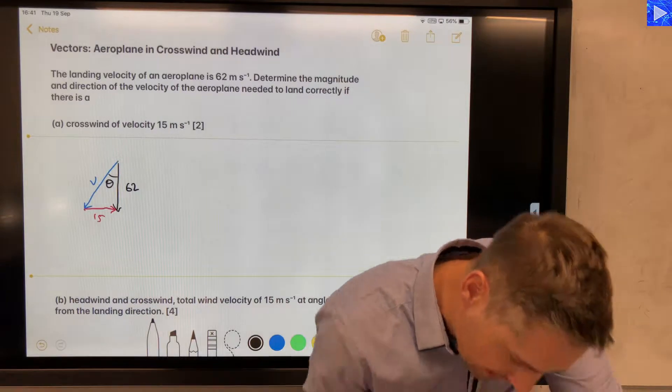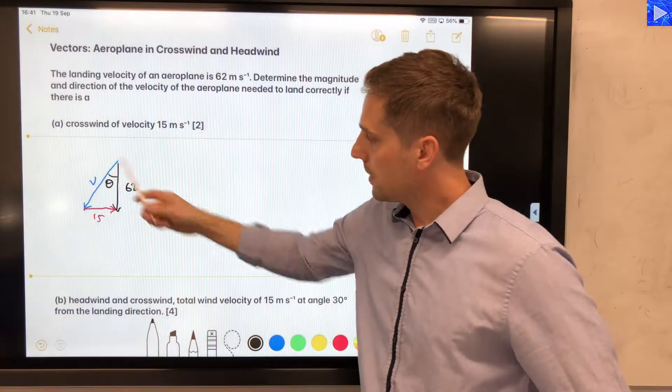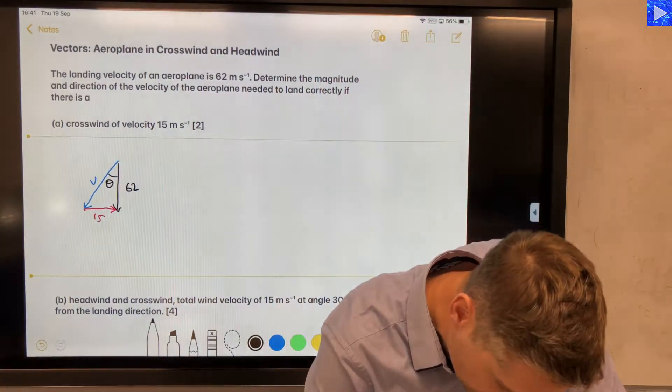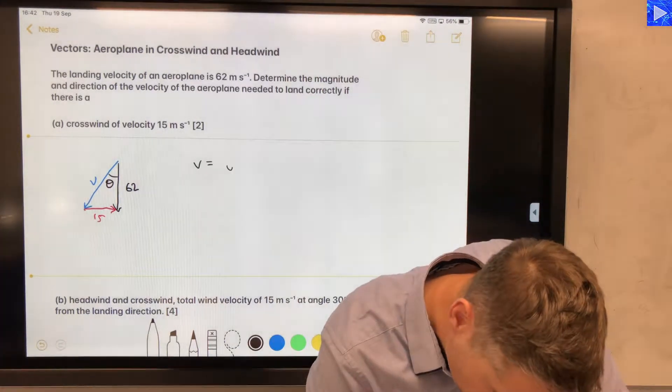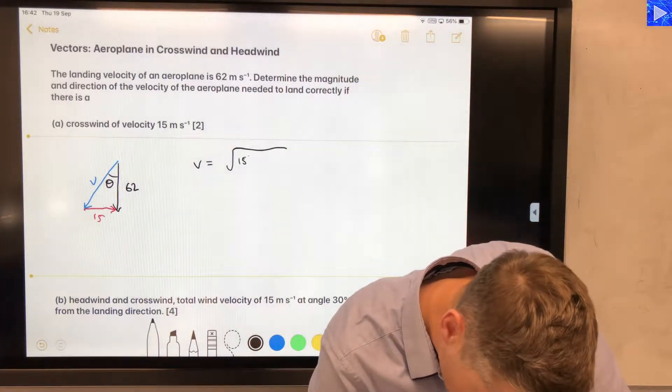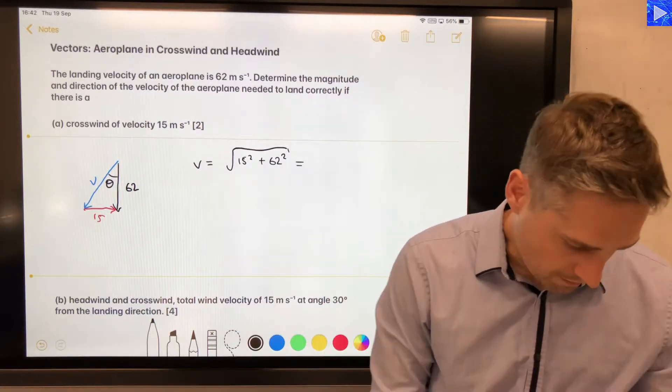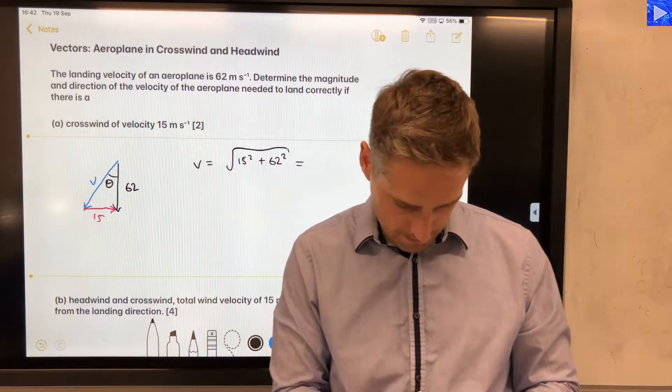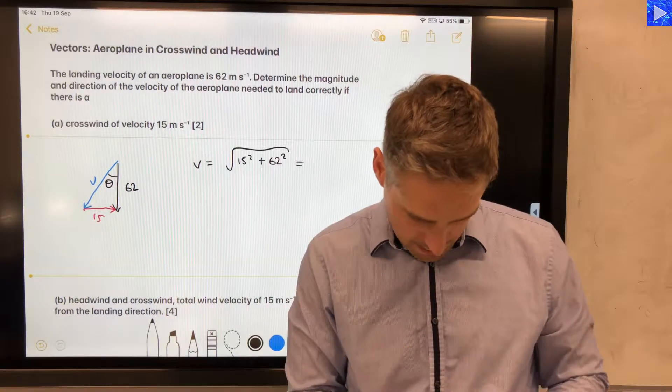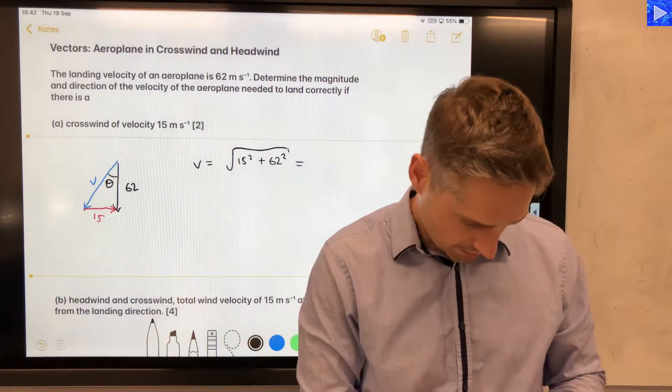I'm just going to write down here this is theta here, this angle here. Alright, so Pythagoras first. So V is going to be equal to square root of 15 squared plus 62 squared. Okay, so put that in and we're going to get 15 squared plus 62 squared.